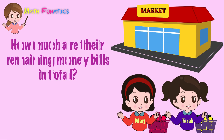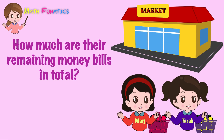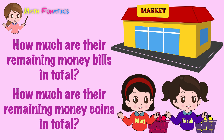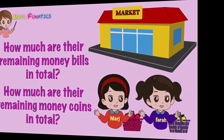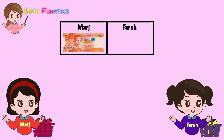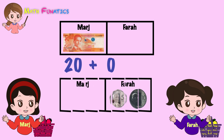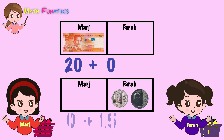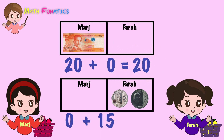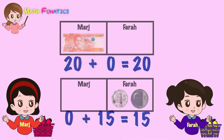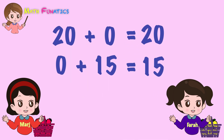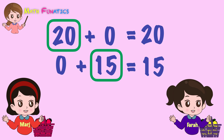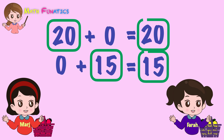So, how much are the remaining money bills in total, and how much are the remaining money coins in total? The money bills left are written as 20 plus 0, and the money coins left are written as 0 plus 15. 20 plus 0 is 20, and 0 plus 15 is 15. Notice that both equations have 0 as one of their addends, and when these numbers are added to 0, the answers appear to be the same numbers.